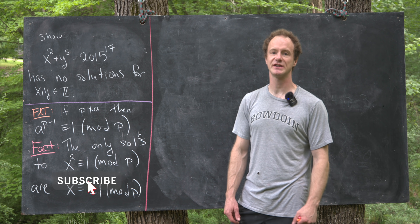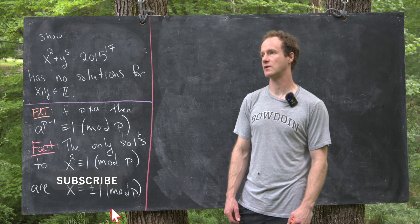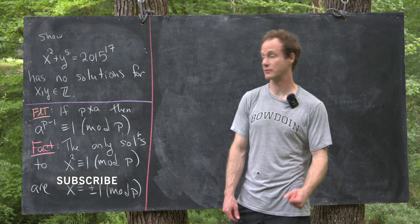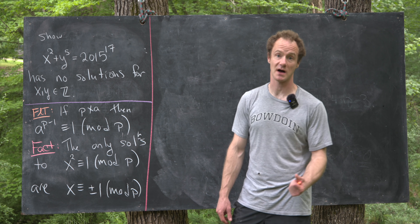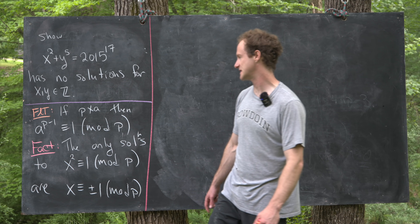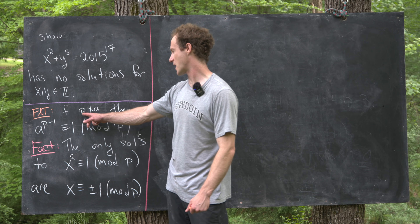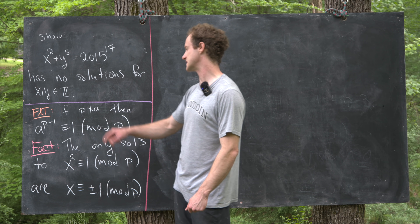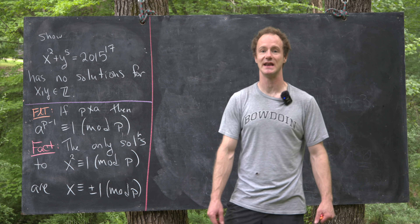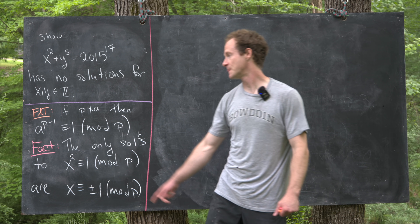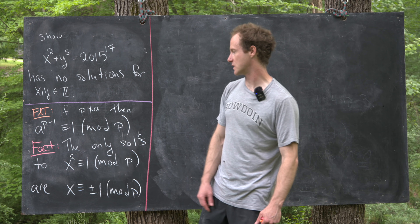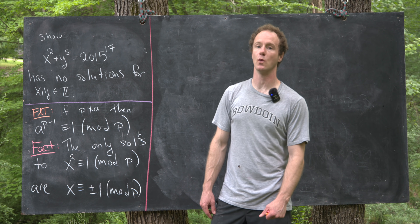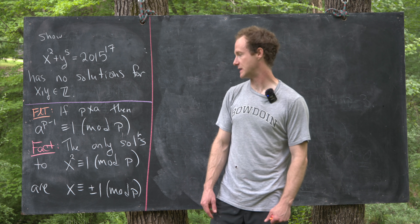We're going to use two pretty standard tools involving modular arithmetic. The first is called Fermat's Little Theorem. It says that if a prime p does not divide a, then a to the p minus 1 is congruent to 1 mod p.